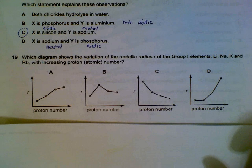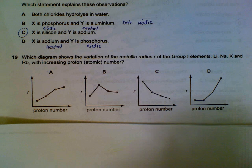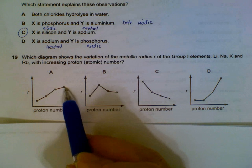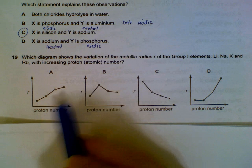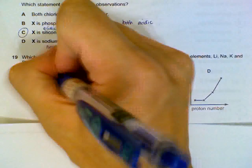Group 1, what happens when we go down the group for the metal radius? Every time we go down the group, we have one more shell being added. So we will expect the radius to be increasing.